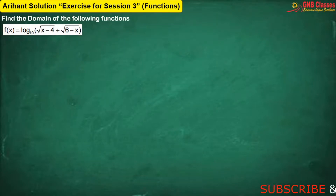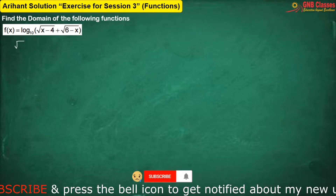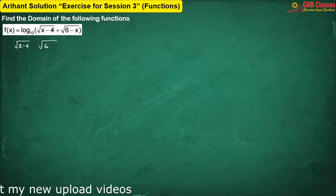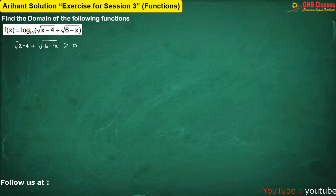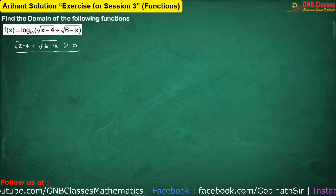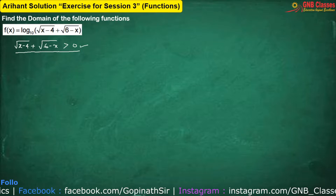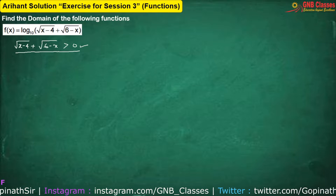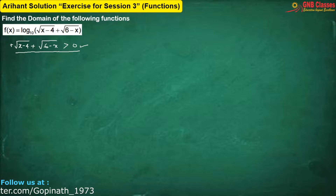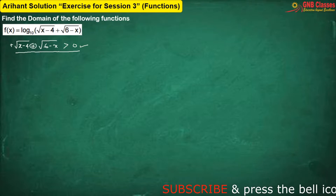In this question, to define the function, first of all we have to see that inside the log we are having root over (x minus 4) and root over (6 minus x). Now this has to be greater than zero. No need to do any operation in this equation because both of them are positive, so if you sum them up it will always give you greater than zero. The sign before root over (x minus 4) is positive and the sign before root over (6 minus x) is also positive. Therefore the sum is also positive.